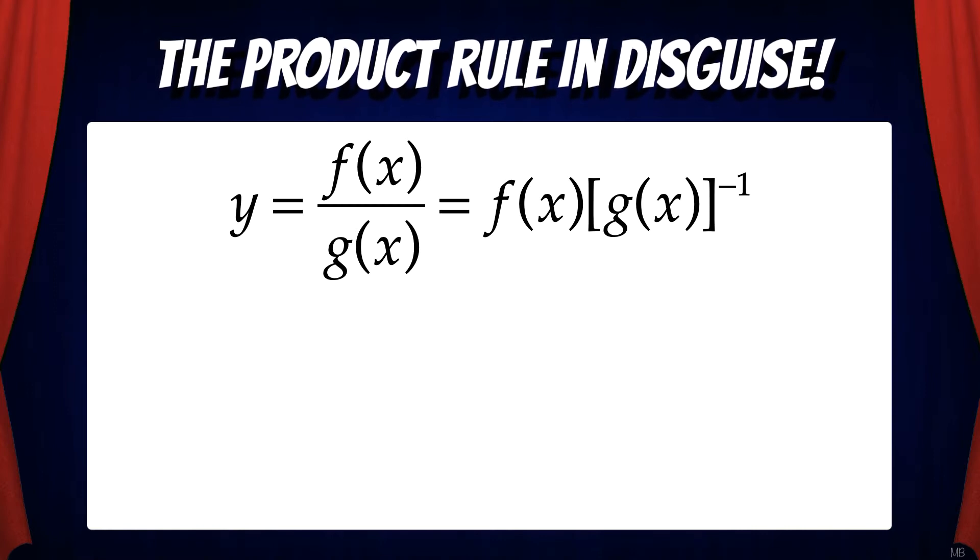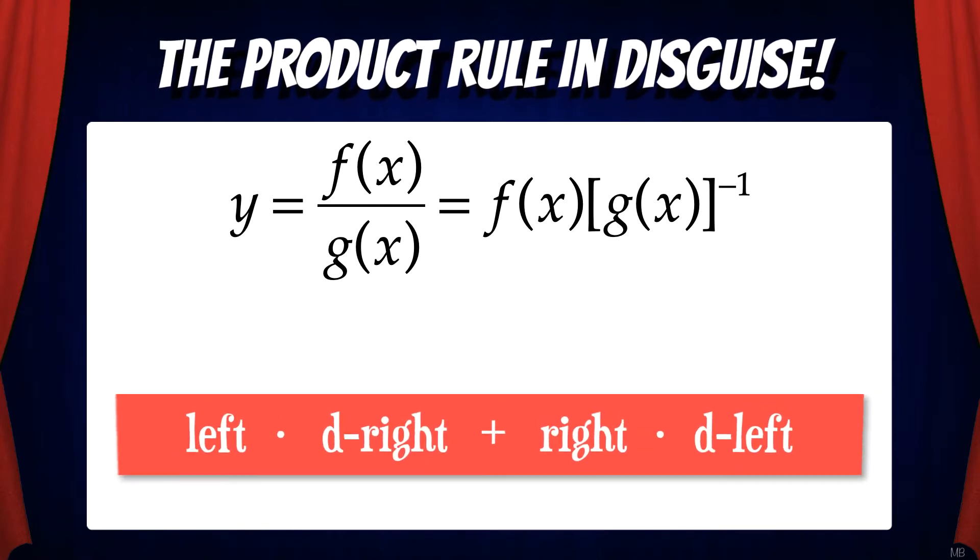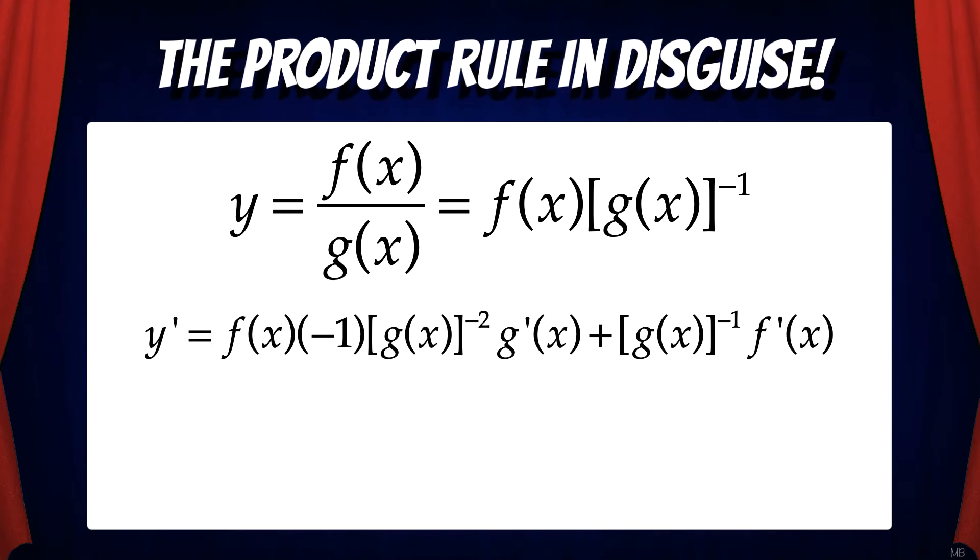Then we can find the derivative of the product using the product rule, left d right plus right d left. That would give us f times negative 1 g to the negative 2 times g' by the chain rule, plus g to the negative 1 times f'. Take a moment and convince yourself that this is the derivative from the product rule. A lot of students forget that you need to use the chain rule when taking the derivative of g to the negative 1.